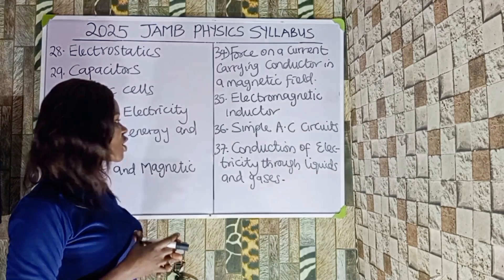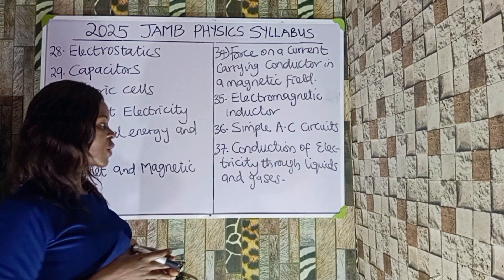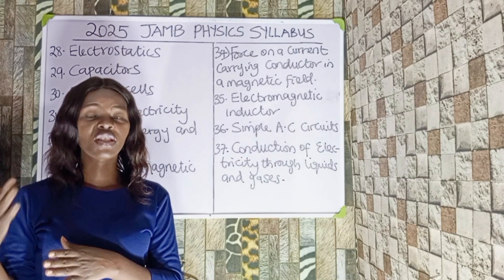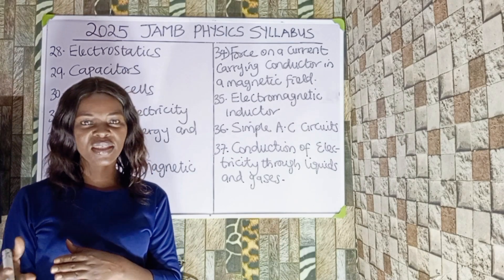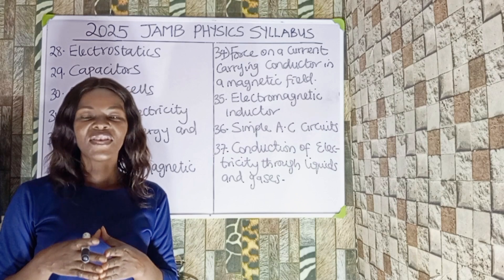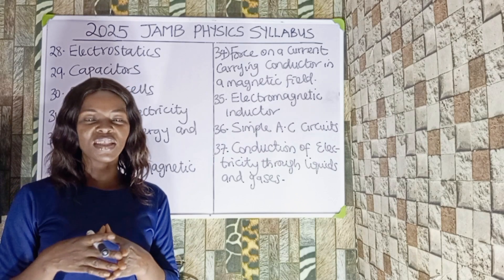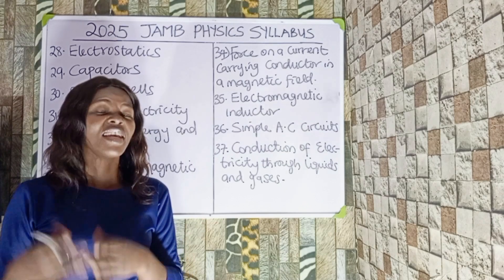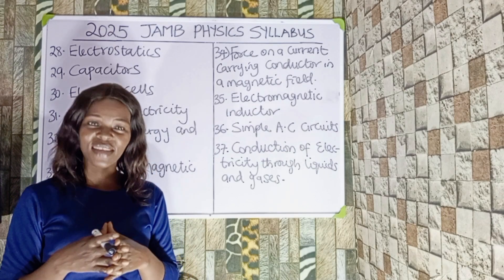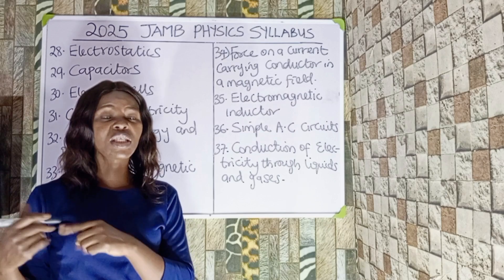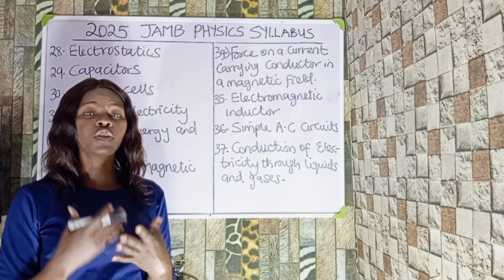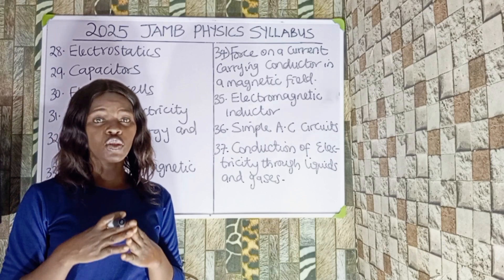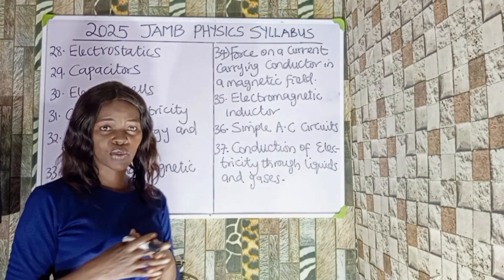Number thirty-six is the conduction of electricity through liquids and gases. You should be looking at electrolysis, how liquids conduct electricity, and how gases conduct electricity. If you're watching this channel for the first time, don't forget to subscribe, because we're going to go through all these topics with questions to explain how to approach them for the forthcoming JAM 2025 exam.